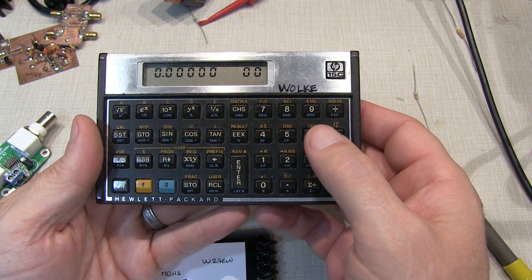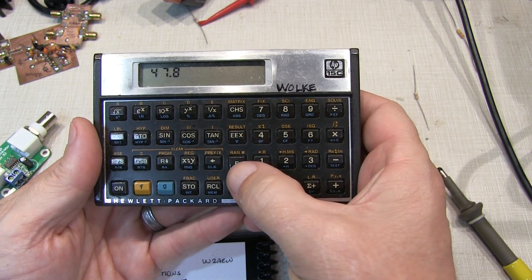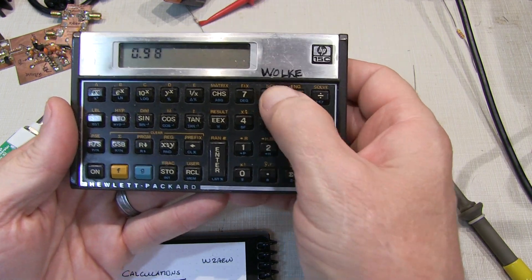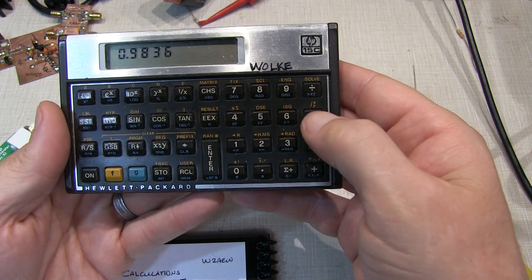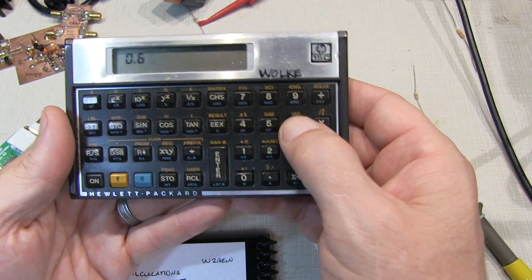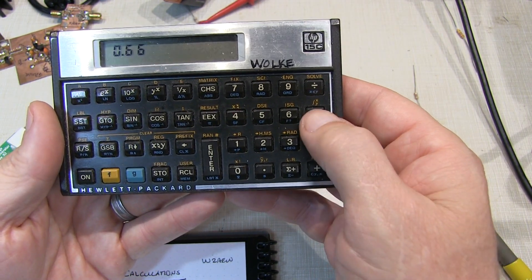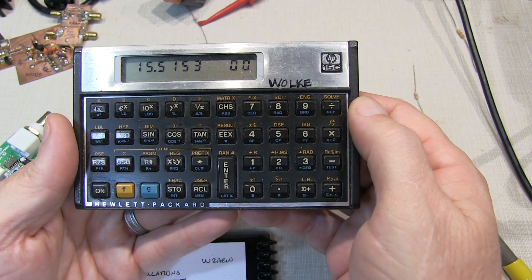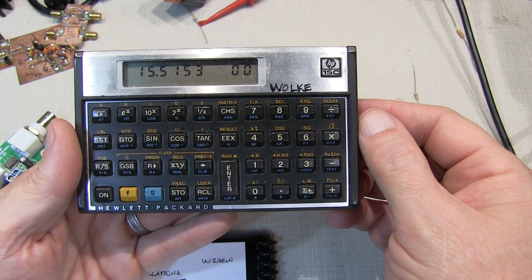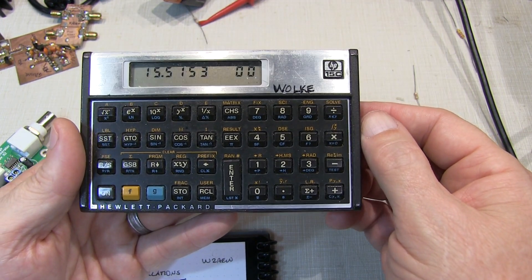So in this case, we measured a delta T of 47.8 nanoseconds. We multiply that by 0.9836, that is the feet per nanosecond. Multiplied by 0.66, which is the velocity factor of the RG58, and divide that by 2. And I get 15.5 feet. And I measured just a little over 15 feet on this cable, so that's pretty darn close.